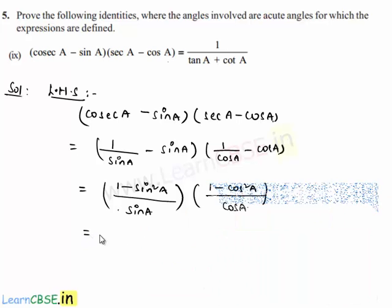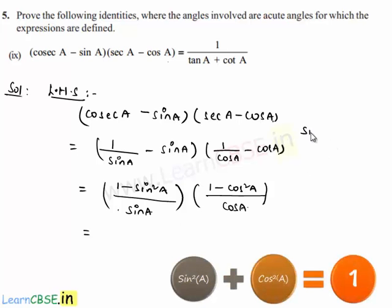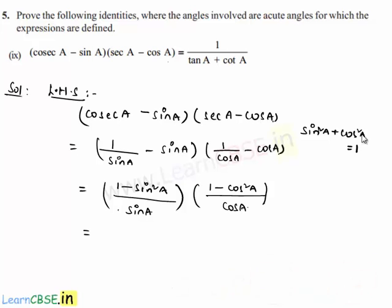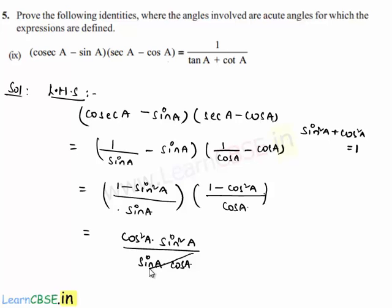Using the identity sin²a + cos²a = 1, we know that 1 - sin²a = cos²a and 1 - cos²a = sin²a. So the expression becomes (cos²a × sin²a) / (sin a × cos a), and sin a · cos a cancels from numerator and denominator, giving cos a × sin a.